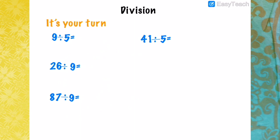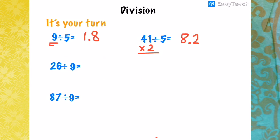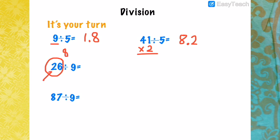Now it's your turn. For 9 divided by 5: multiply 9 by 2 to get 18, then place the decimal to get 1.8. For 41 divided by 5: 41 times 2 is 82, so 41 divided by 5 is 8.2. For 26 divided by 9: add 6 plus 2 to get 8. Since 8 is less than 9, retain the first digit (2) and the sum (8) is the repeating decimal. So 26 divided by 9 is 2.8 repeating.